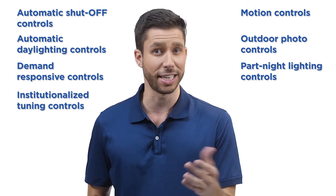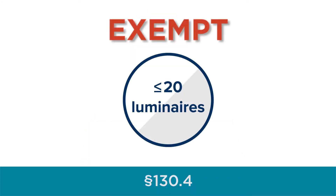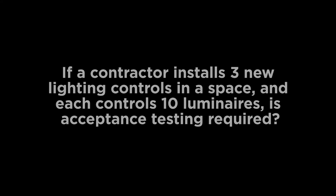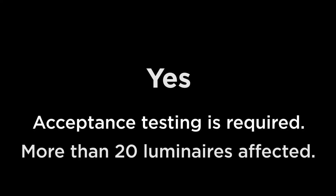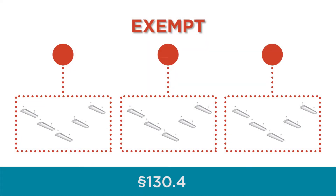These controls must comply with acceptance testing requirements per section 130.4. A new exception for lighting alterations states that when a lighting alteration project adds lighting controls to control 20 or fewer luminaires for the entire project, the project is exempt from acceptance testing. For example, in addition to a fluorescent to LED conversion, a building owner asks for occupancy control. The contractor installs three new occupancy sensors in the space and each controls 10 luminaires — a total of 30 luminaires. Since the total exceeds 20, acceptance testing is required. However, if each sensor only controlled five luminaires, bringing the total down to 15, the project would be exempt from acceptance testing requirements contained in section 130.4.